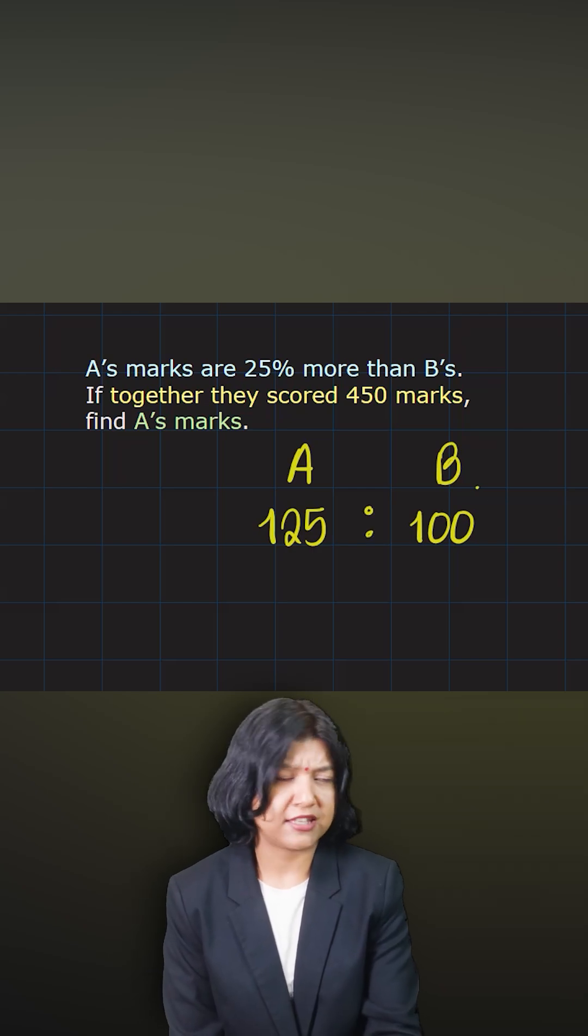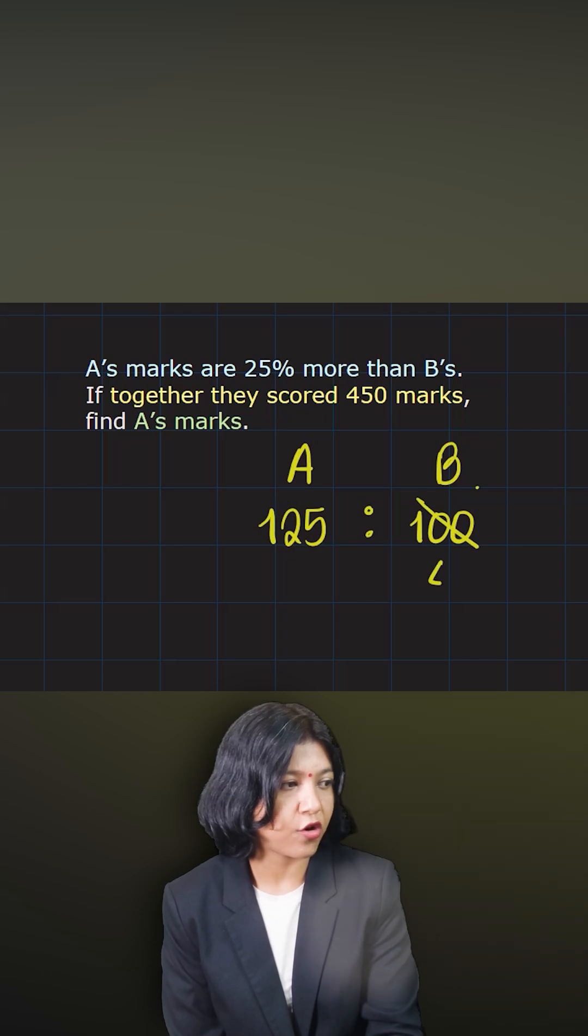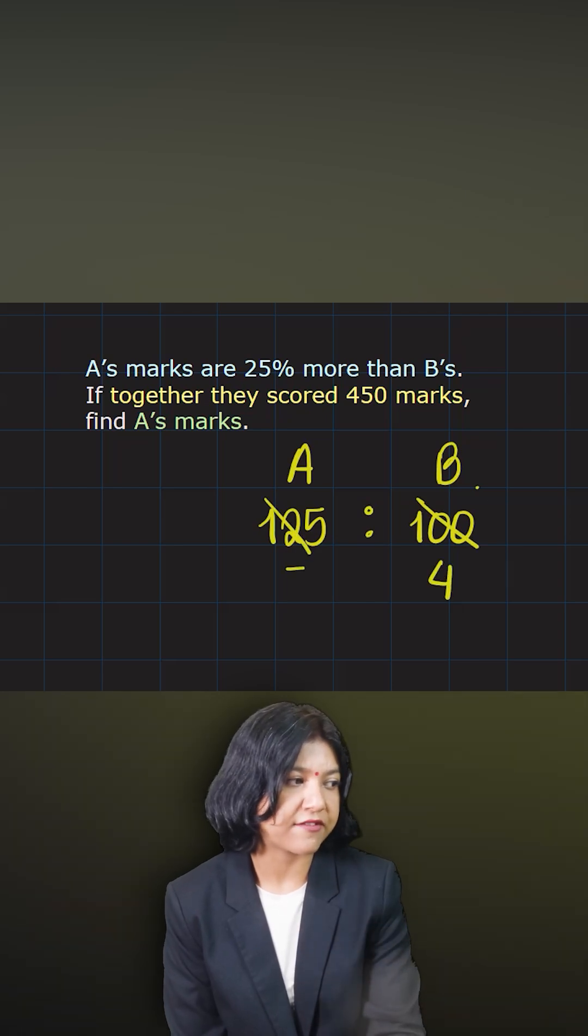So now take the ratio. I think that is the easiest thing you can do here. Both of them are divisible by 25. 25 times 5 is 125, 25 times 4 is 100.